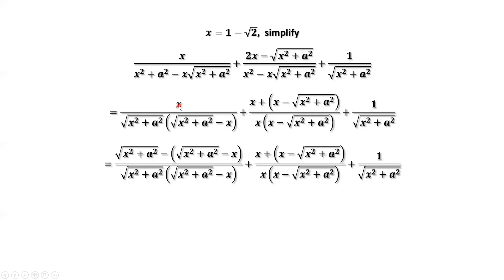We write x as square root of x squared plus a squared minus square root of x squared plus a squared minus x. You can see here, minus x minus x is x. Square root of x squared plus a squared minus square root of x squared plus a squared cancelled out. The next thing we need to do is to split the first term into two parts, the second term into two parts.